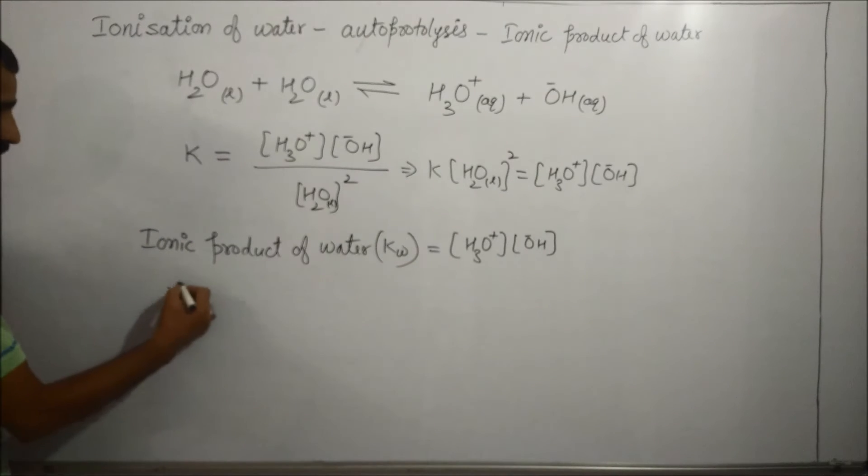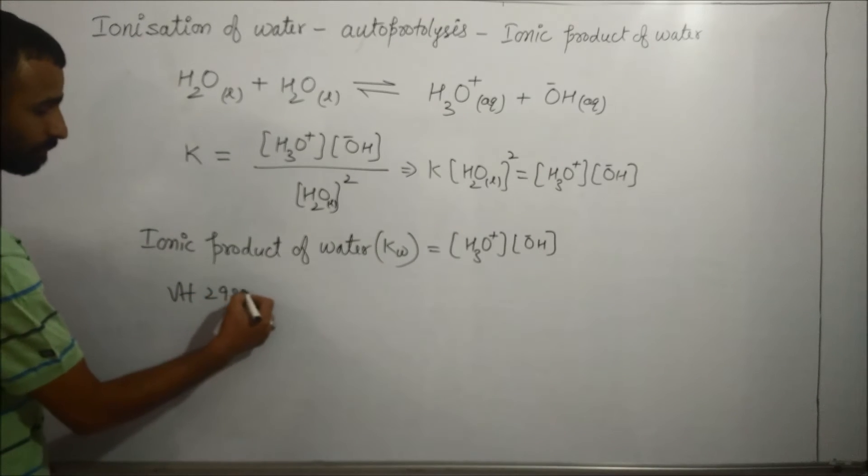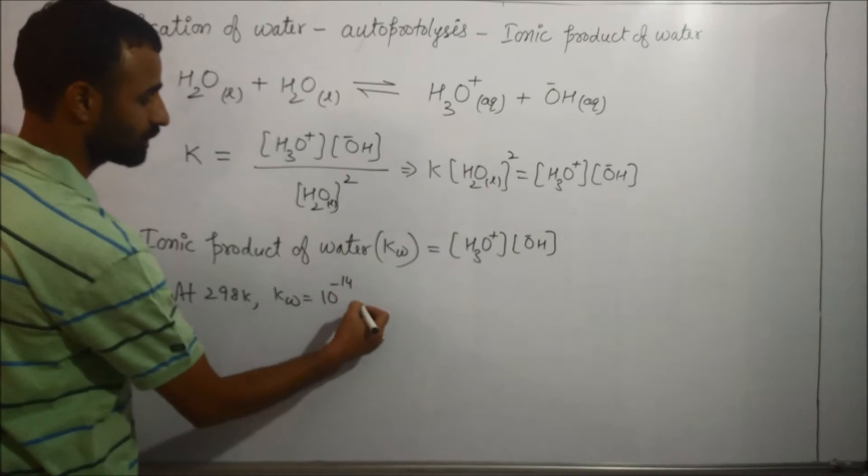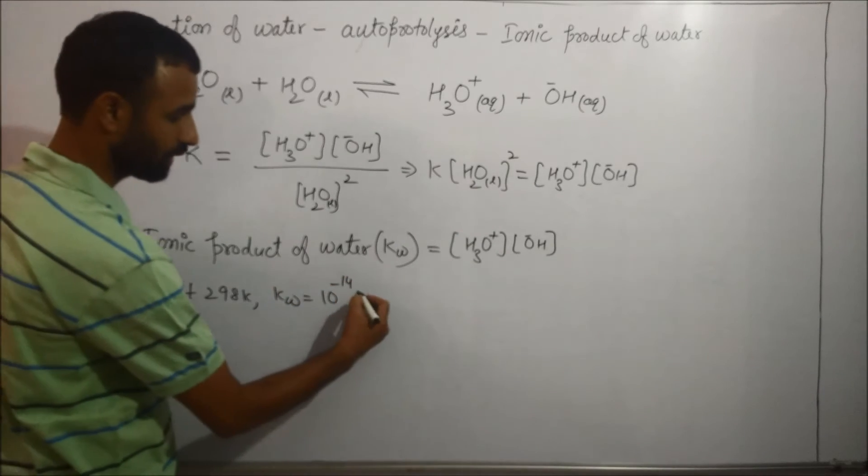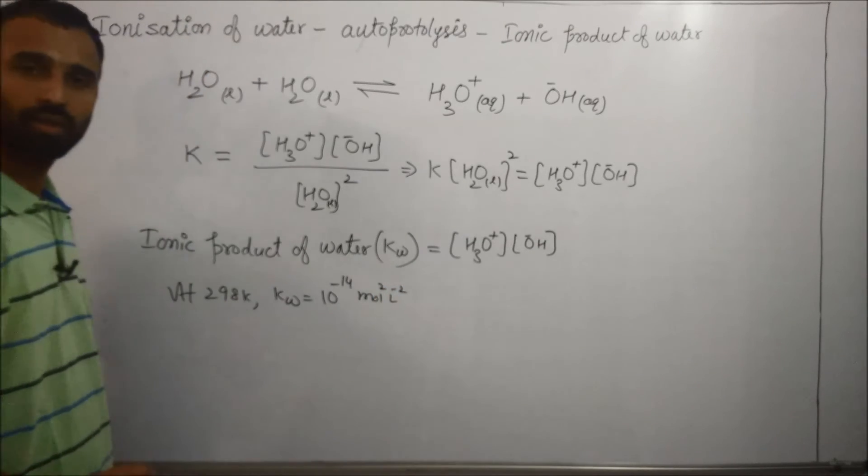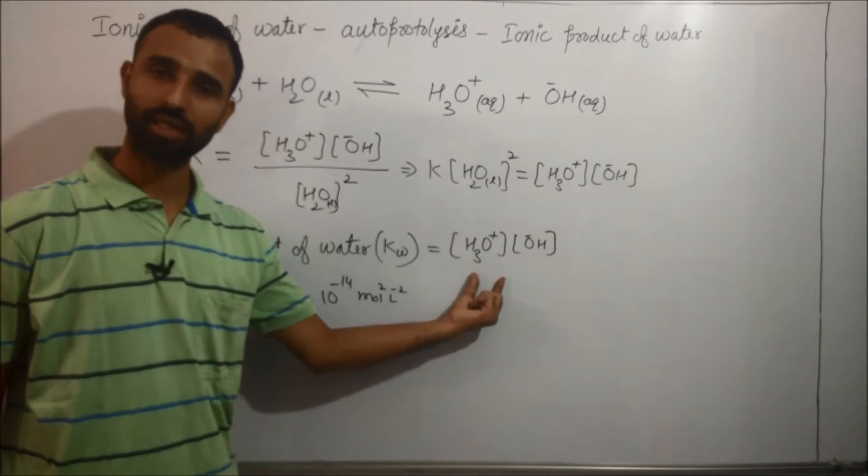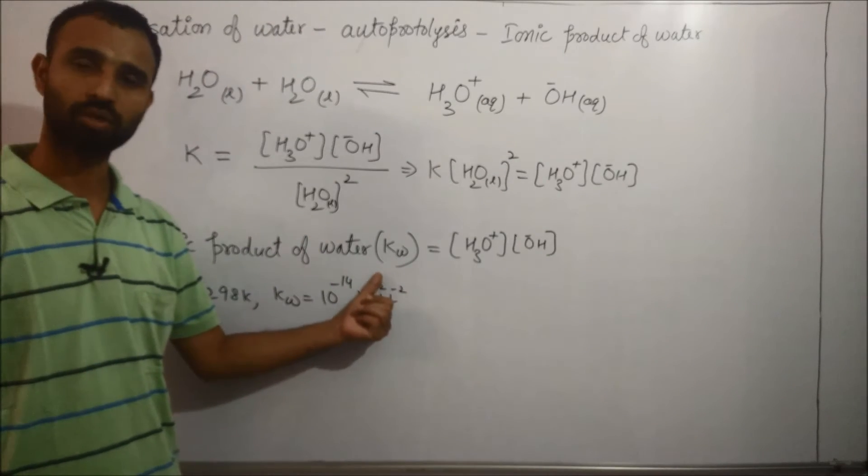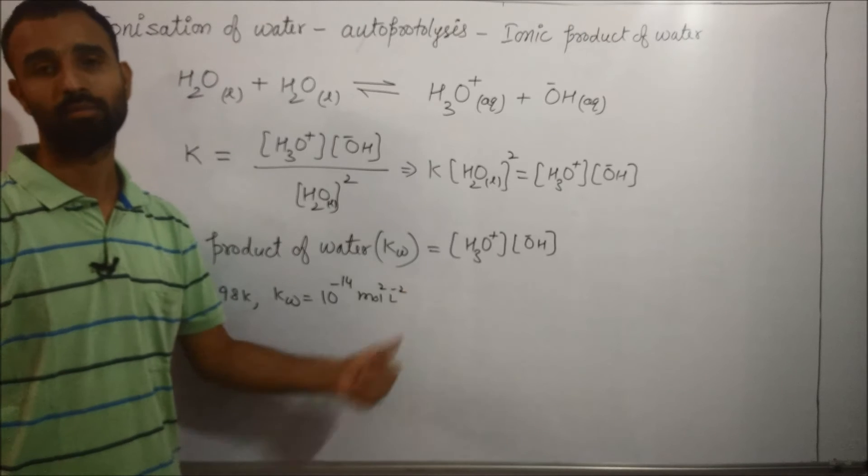At 298 Kelvin, value of KW is 10 raised to the power of minus 14 mole square per liter square. Because it is mole per liter, mole per liter, so it becomes mole raised to power 2, liter raised to power minus 2.